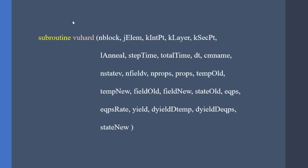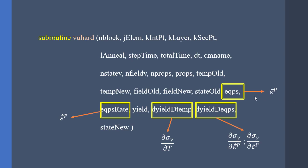This is the subroutine's header. Most of the parameters are known, so I am going to focus on the most important inputs. First we need to define the equivalent plastic strain and its rate. The two other important parameters are the derivative of the yield surface with respect to the equivalent plastic strain and its derivative.